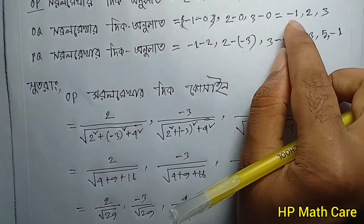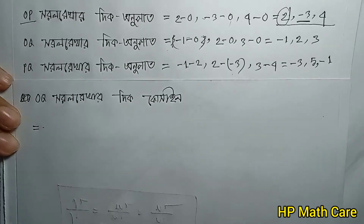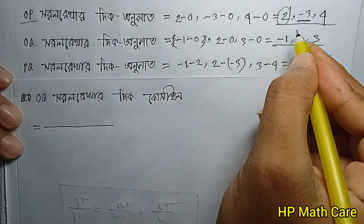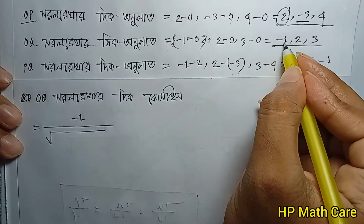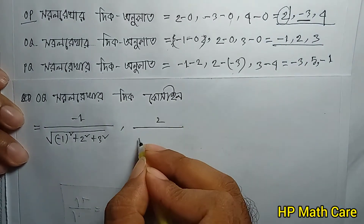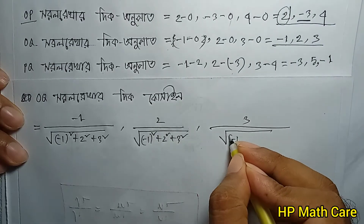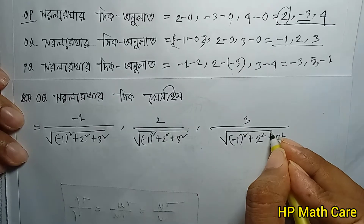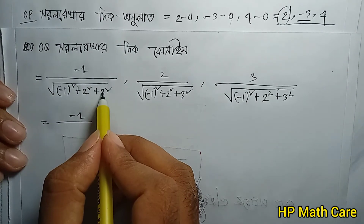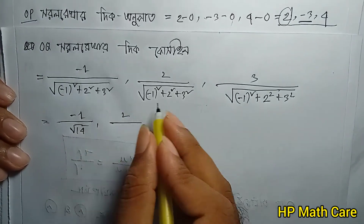Times minus 3 equals minus 1, 2, 3. So for OQ: magnitude is square root of minus 1 squared plus 2 squared plus 3 squared. That is root of 1 plus 4 plus 9, which equals root 14. Direction cosines of OQ are minus 1 over root 14, 2 over root 14, 3 over root 14.